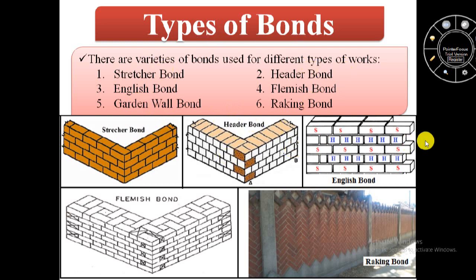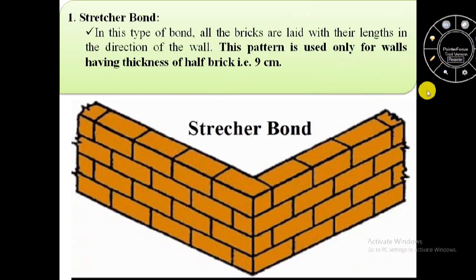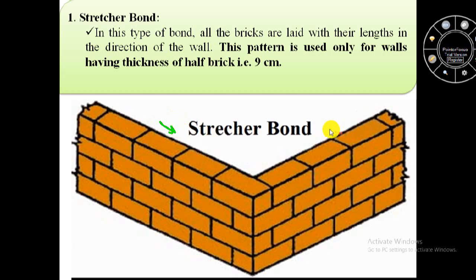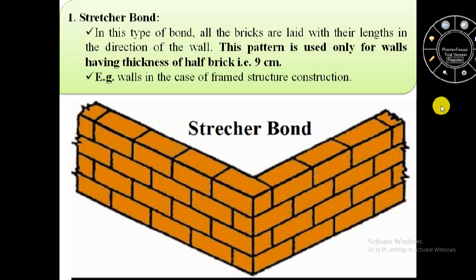Firstly we will discuss about stretcher bond. In this type of bond all the bricks are laid with their lengths in the direction of the wall. In this image we can see all the bricks are laid with their length in the direction of the wall. This pattern is used only for walls having thickness of half brick, that is 9 centimeter. An example of stretcher bond is walls in the case of frame structure construction.